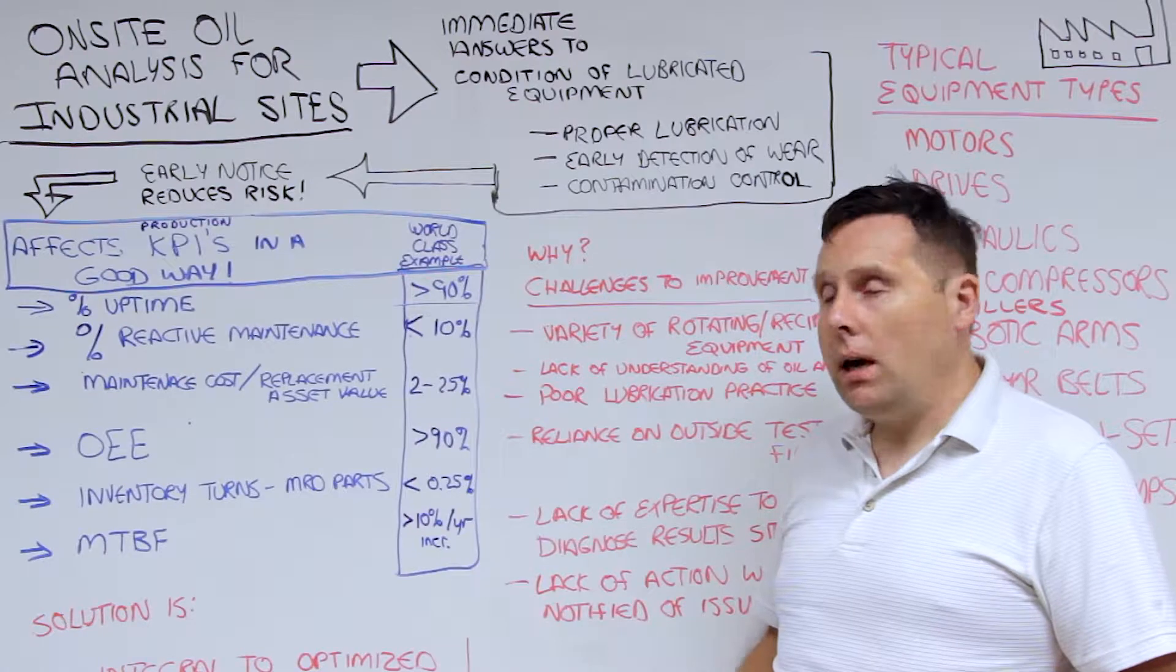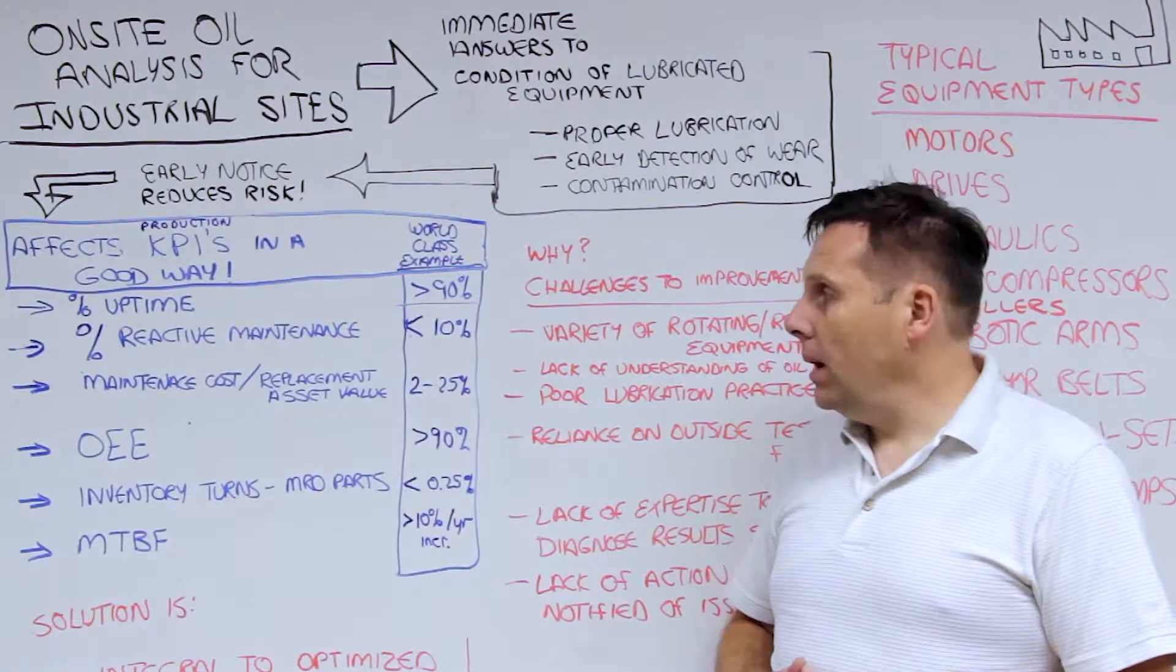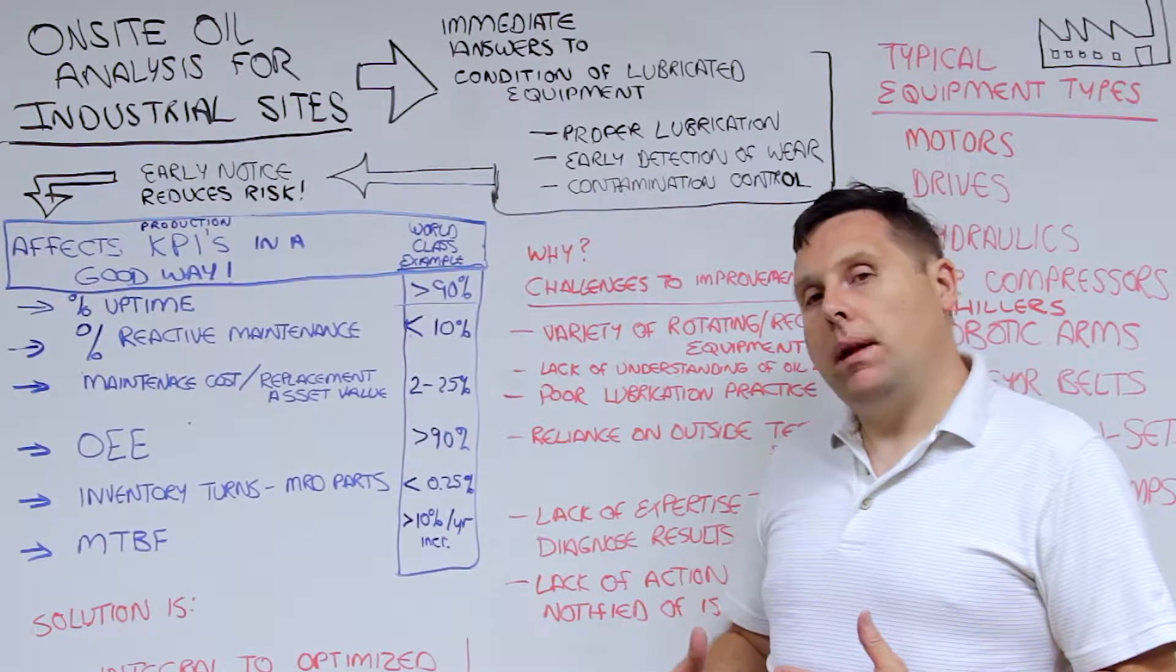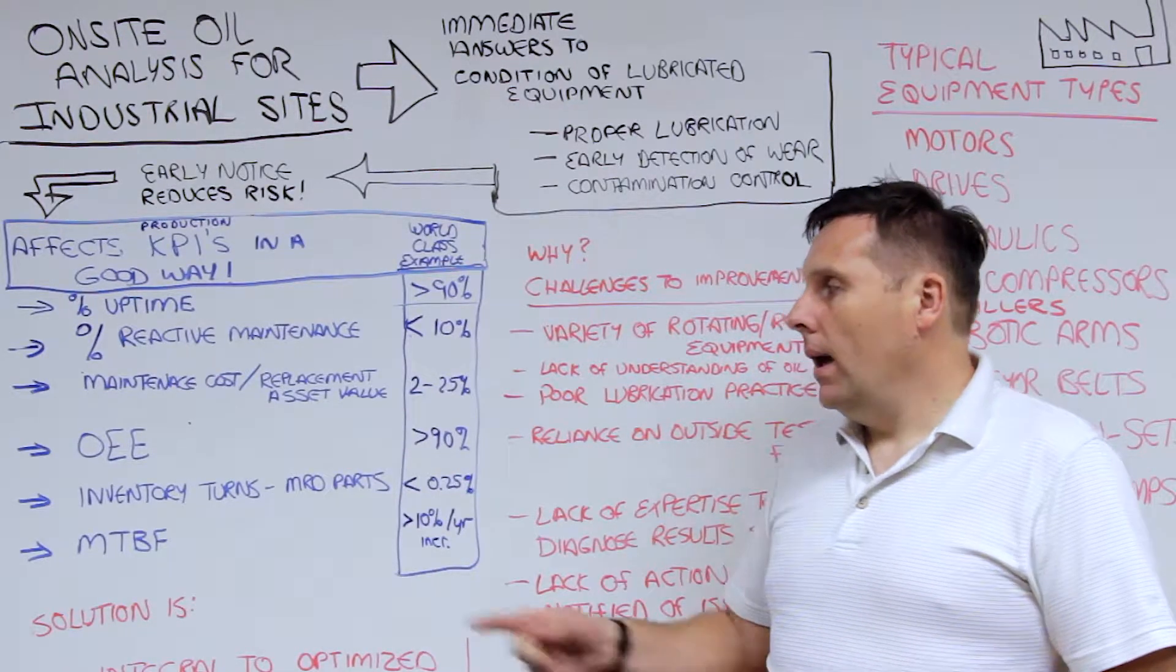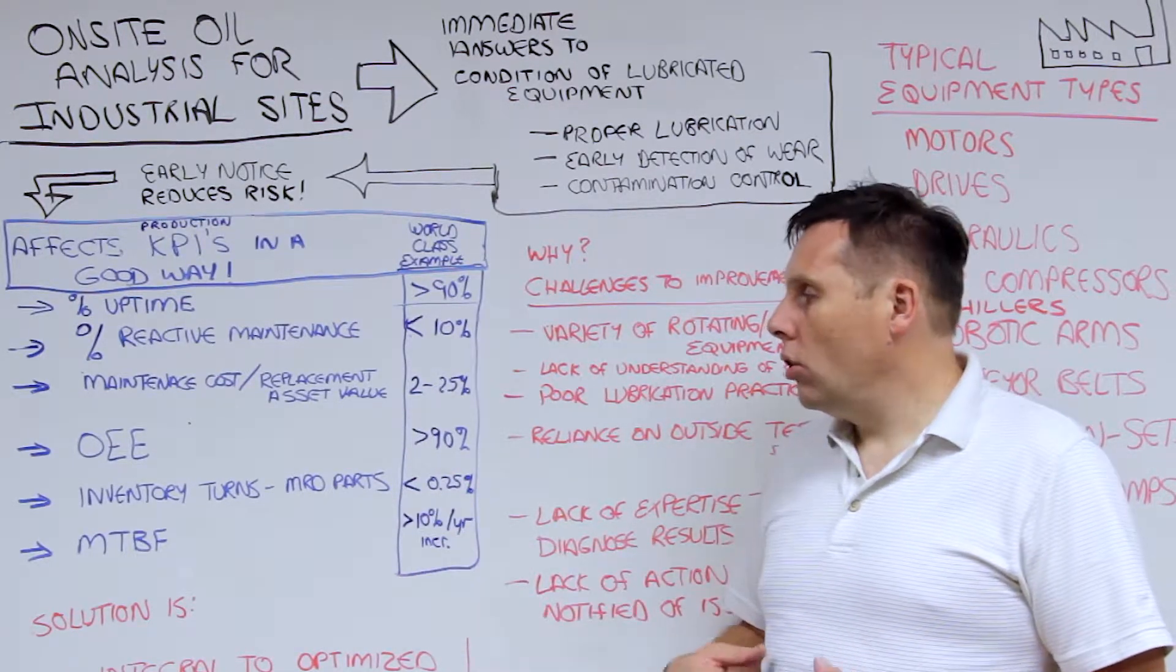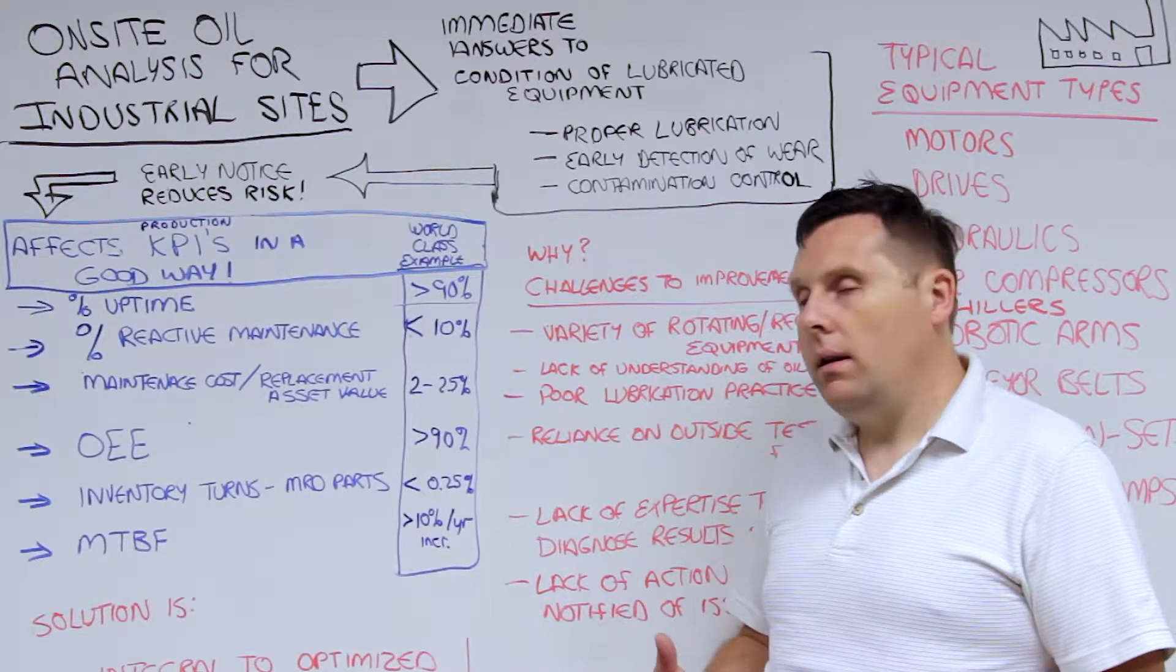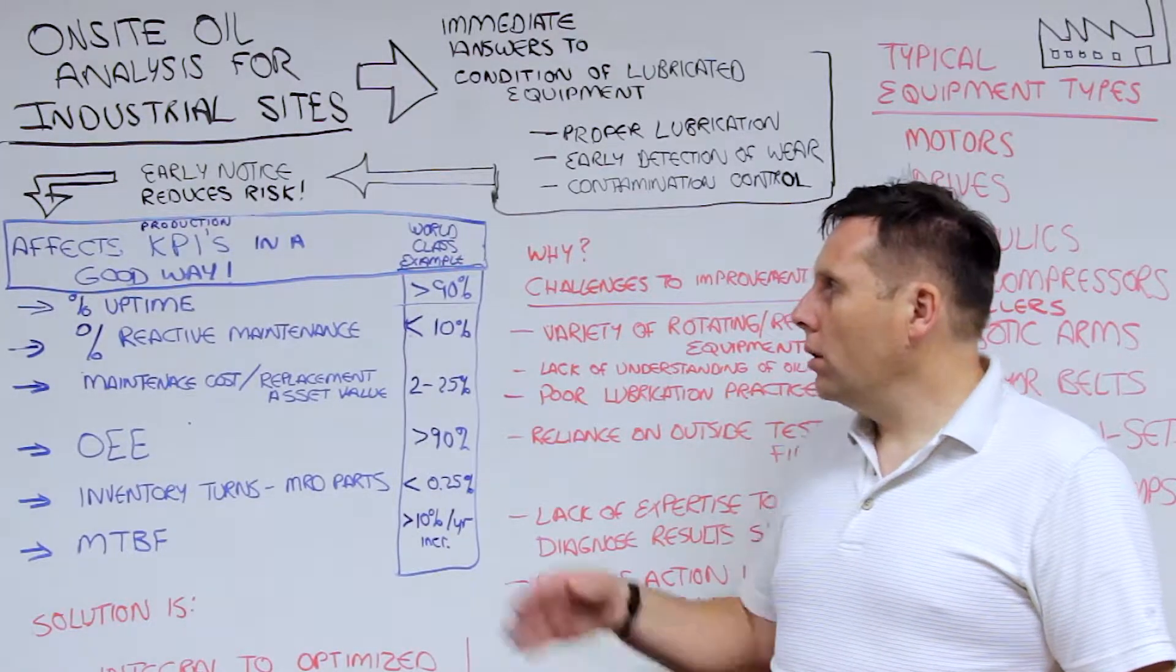It could be percentage uptime on reliability of equipment, the percent of reactive maintenance that's needed, the percentage maintenance cost over replacement of the asset value, overall equipment effectiveness, the amount of inventory turns, or the amount of MRO or maintenance and reliability operational parts in stock, mean time between failures. All of these metrics are very important.